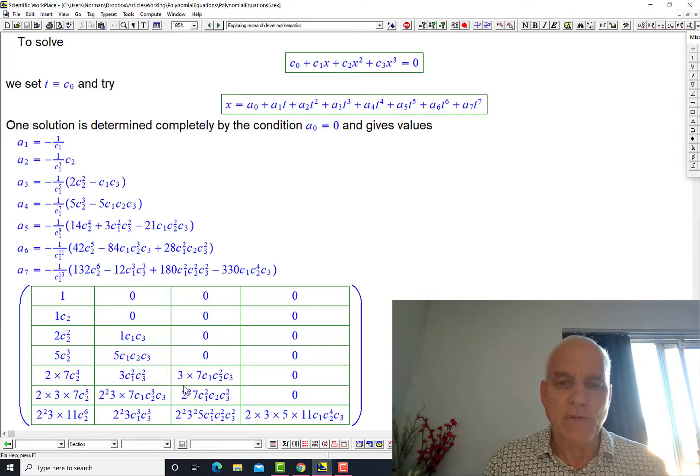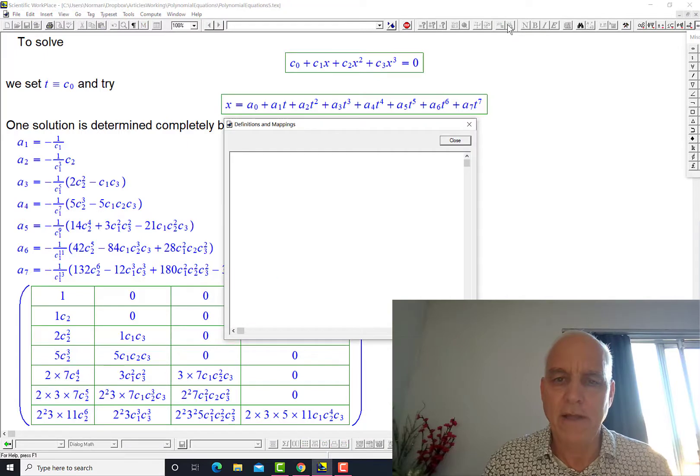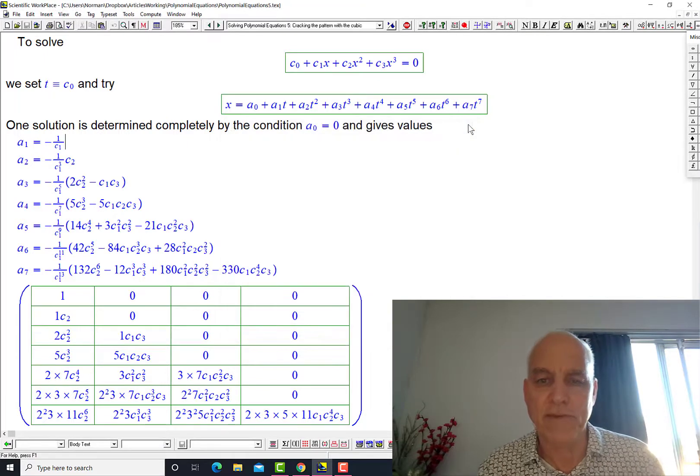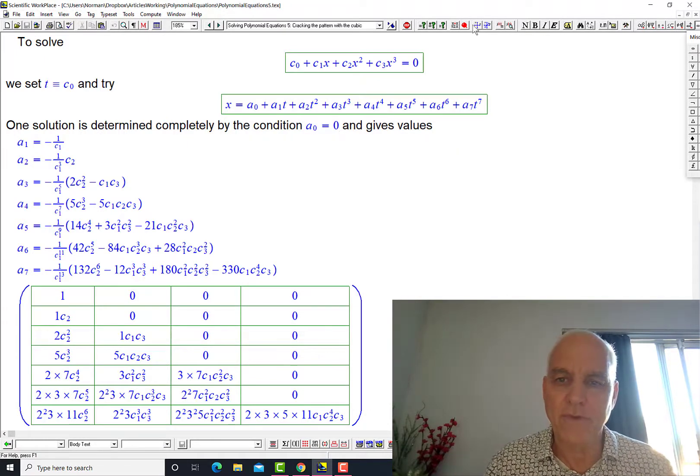Let me illustrate that in this case here. So what we're really doing is we're looking to see what this solution x looks like. And I'm going to do that in another way so we can actually see what's going on. So let me define all these a's. So a sub 0, a sub 1, a sub 2, a sub 3, a sub 4, a sub 5, a sub 6, a sub 7.